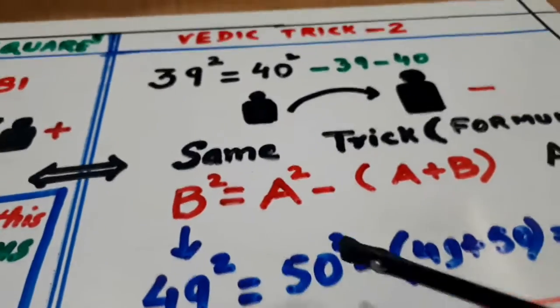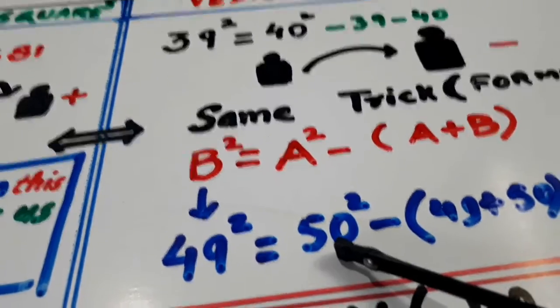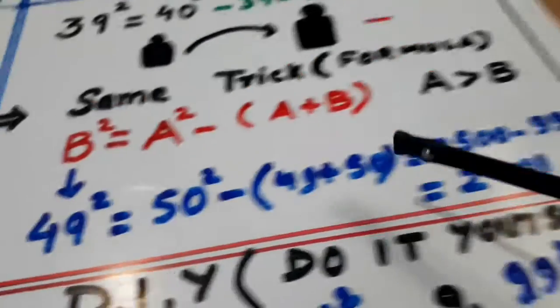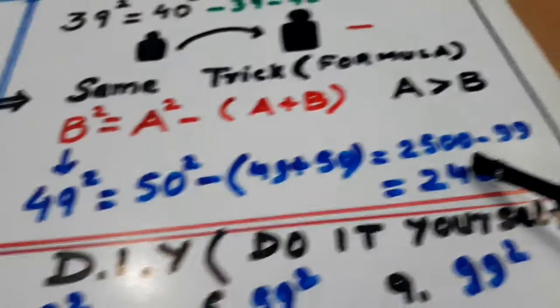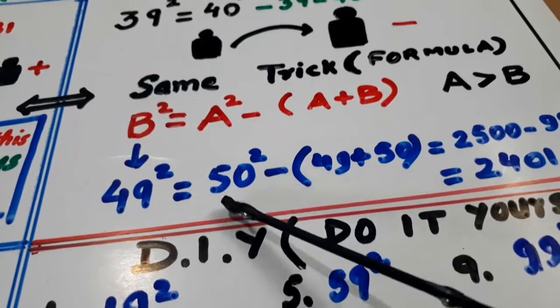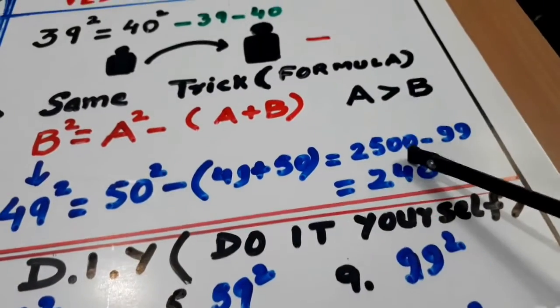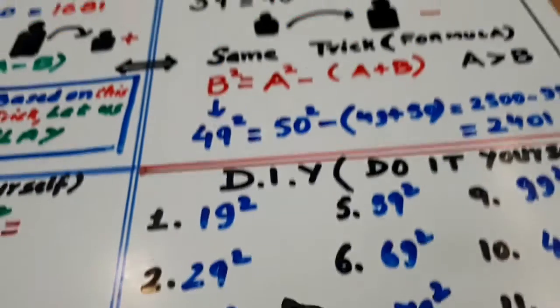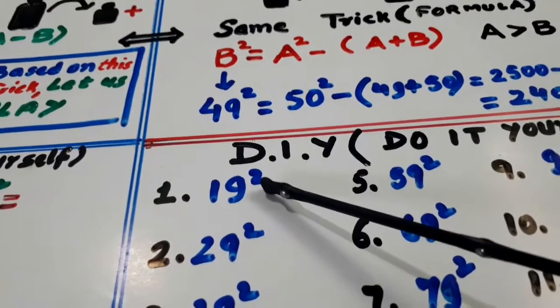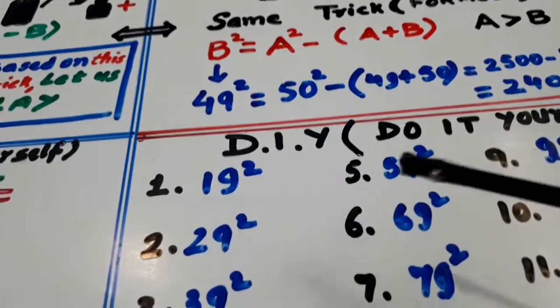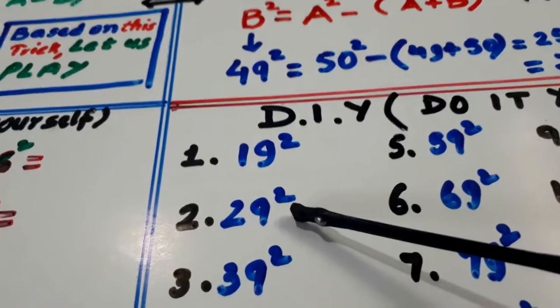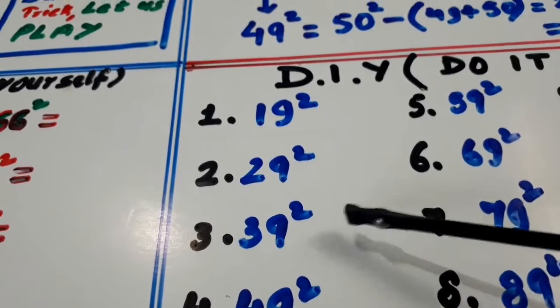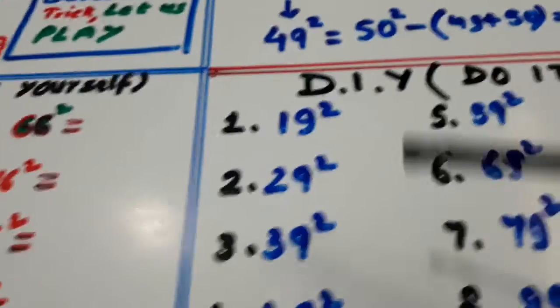49 square. Ab bada hai wala likhou. 15 ka square is equal to 20 ka square minus 19 minus 20. 29 ka square. It will be 30 ka square minus 29 minus 30. 39 ka square is equal to 40 ka square minus 39 minus 40. So this is how you will be doing it.